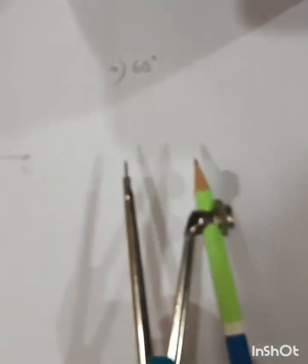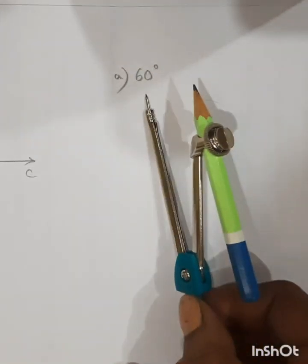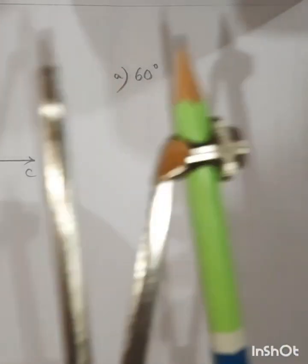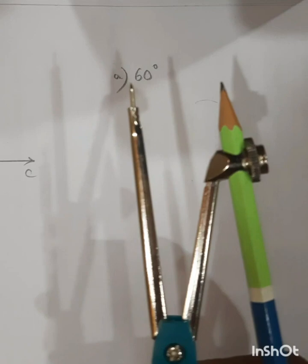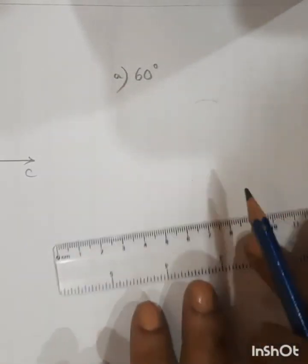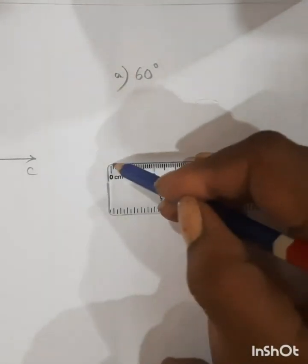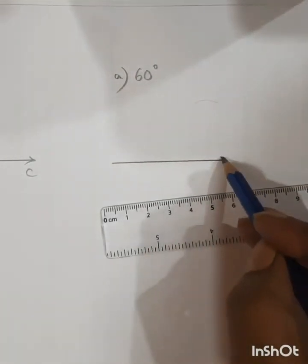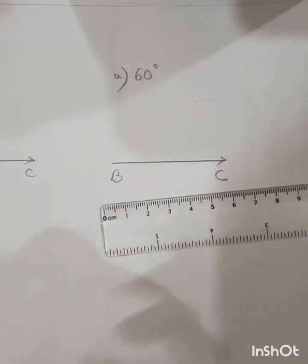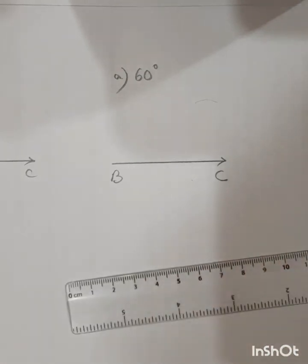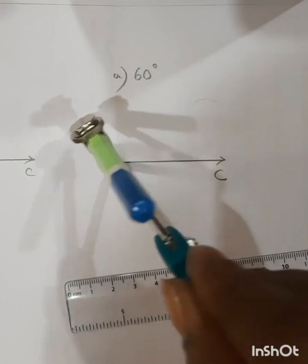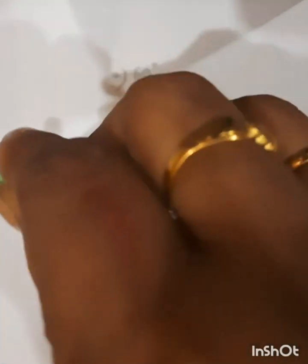First we are doing 60 degrees, which is a multiple of 15 — 15 fours are 60. With the help of a compass we are going to construct a 60 degree angle. First, draw a ray and name it BC — any measurement you can take, 5 centimeters or 6 centimeters as you wish. Now keep the compass pin at point B and draw a semicircle.